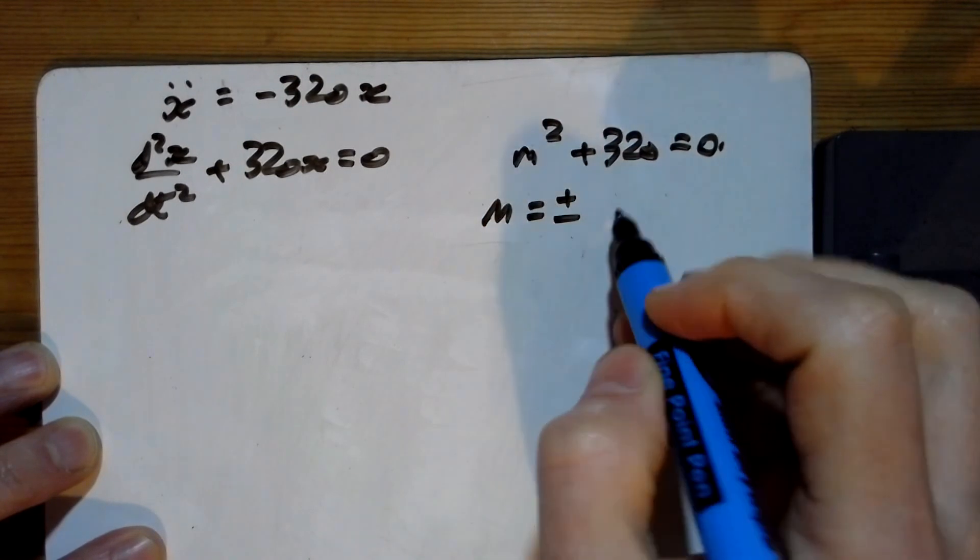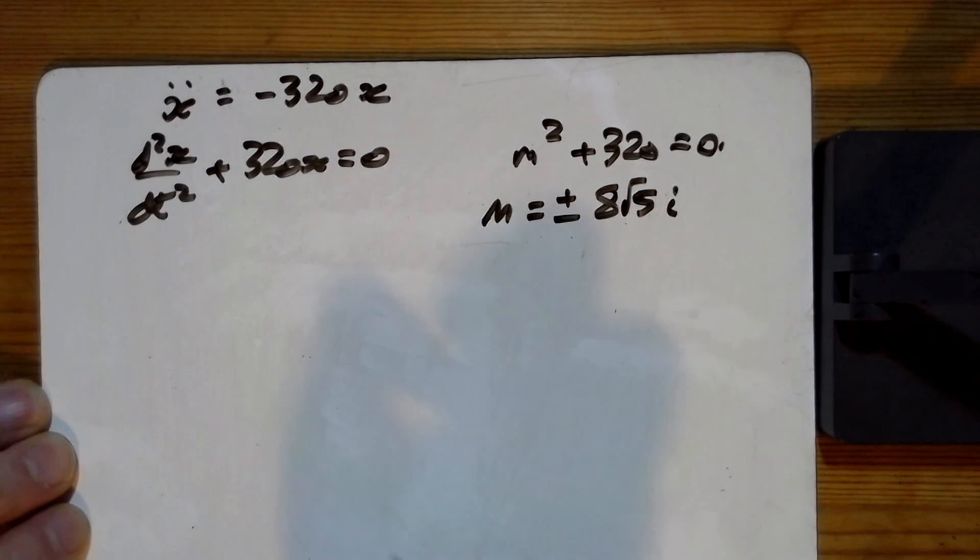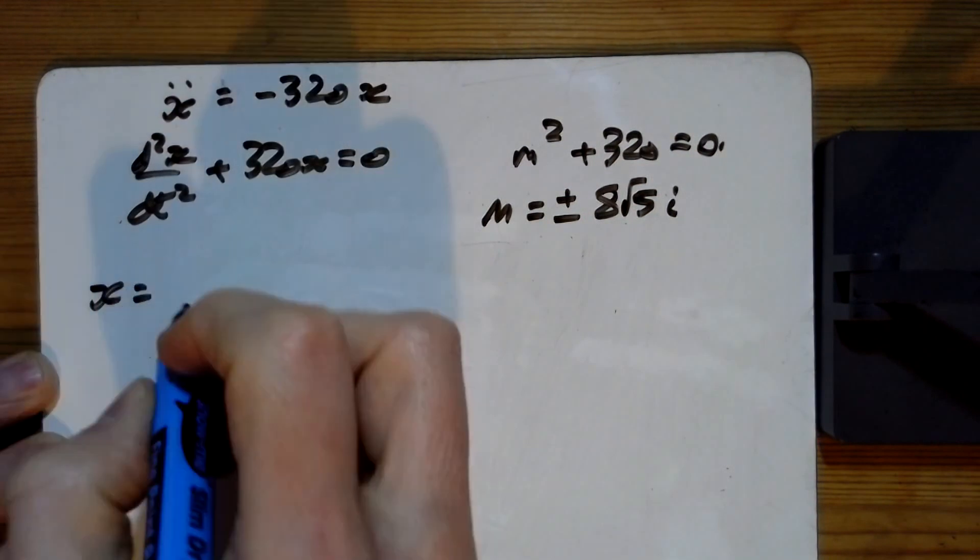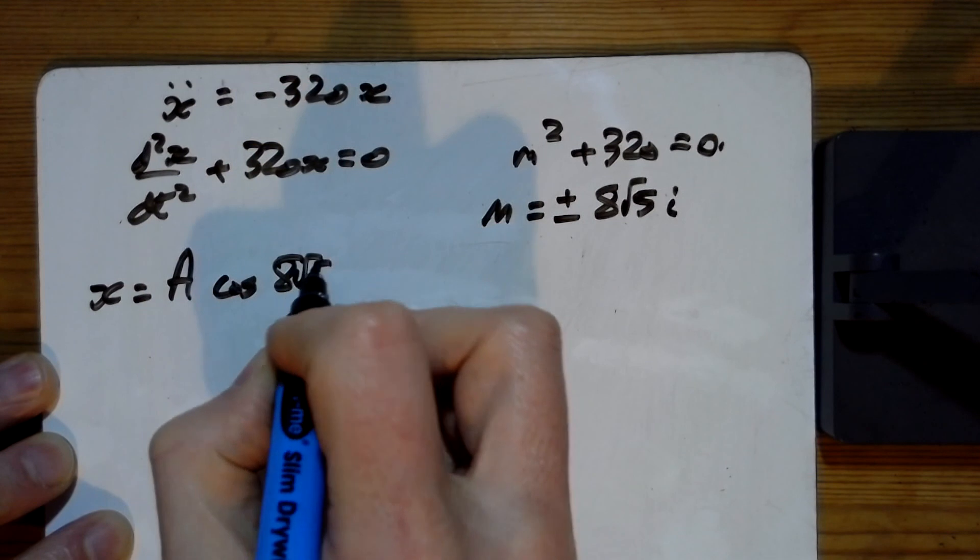root of -320, which is 8 times √64 times 5, or 8√5i. So the general solution is A cos 8√